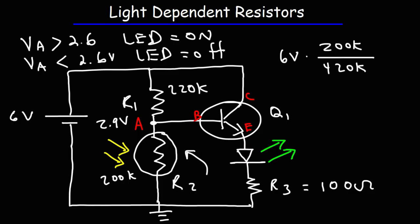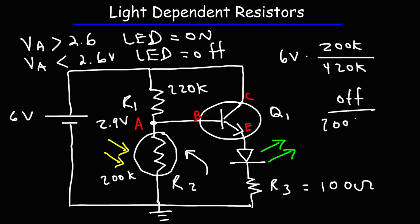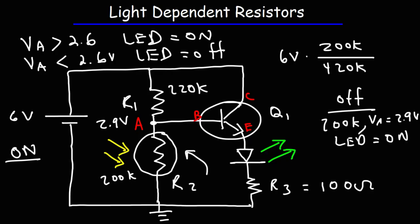Keep in mind: when my living room light is off, the resistance of the LDR is 200K, and VA is 2.9 volts, so the LED is on. But let's see what happens when the main light is turned on. We know the resistance drops between 20 and 40K, so let's say it drops to 30K. What's the new VA value?